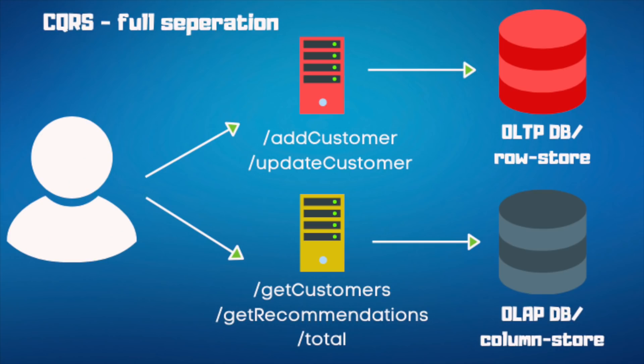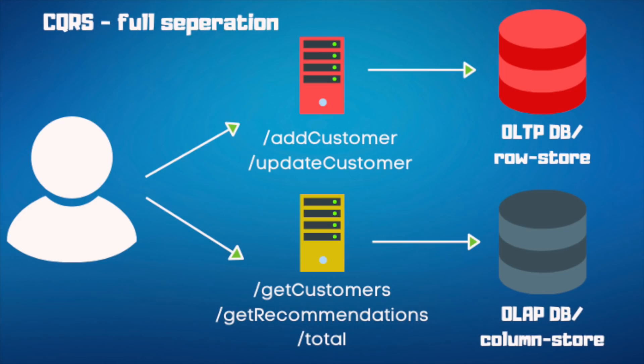You get nice security aspects from this separation, which is beneficial. You can go all the way and do full separation — two services with completely separate databases. Write workloads continue using the OLTP raw-store database, like Postgres, where columns are organized in row format. For reads, you can benefit from a column store in certain situations, so you point your read service to an OLAP column-store database.